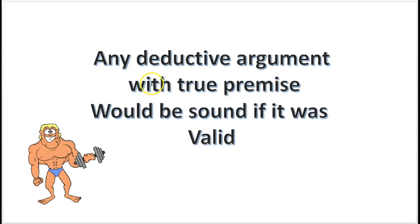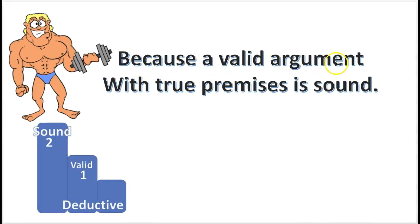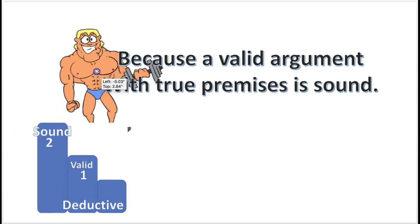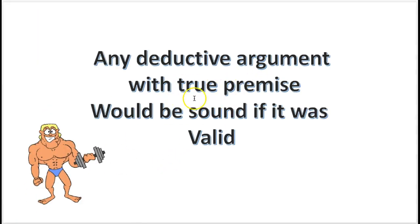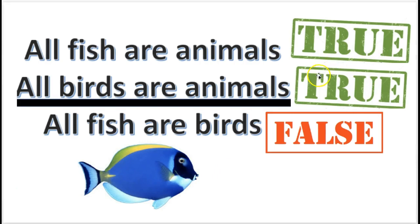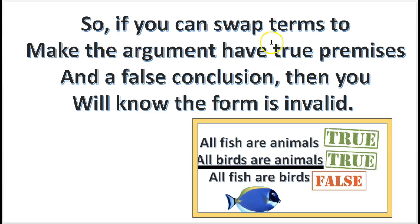Remember, any deductive argument that has true premises would be sound if it was valid. A valid argument with true premises is sound. So you want to get true premise, true premise, false conclusion by substituting the terms. If you can swap the terms to make an argument have true premises and a false conclusion, then you will know that the argument form is invalid — you can prove that it's invalid.